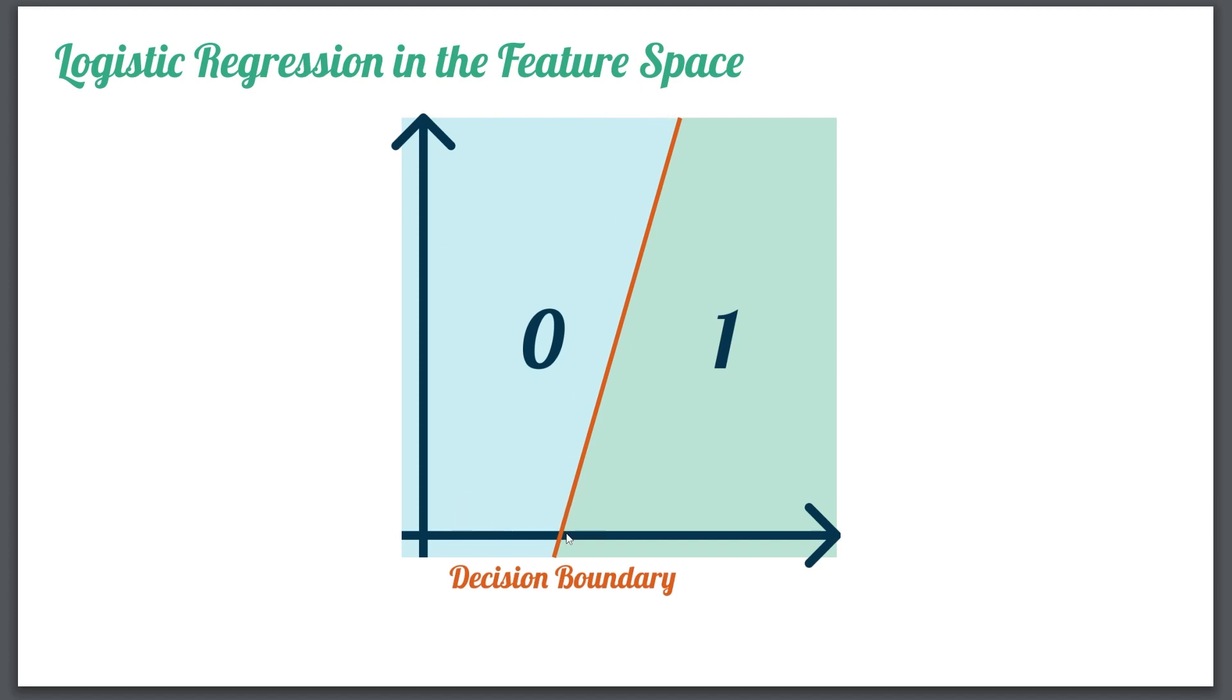The line here that separates the two decisions is called a decision boundary. And the goal of logistic regression is to, of course, find this boundary. We want to find such a boundary so that you get this splitting of zeros on one side, ones on the other in the best possible way.